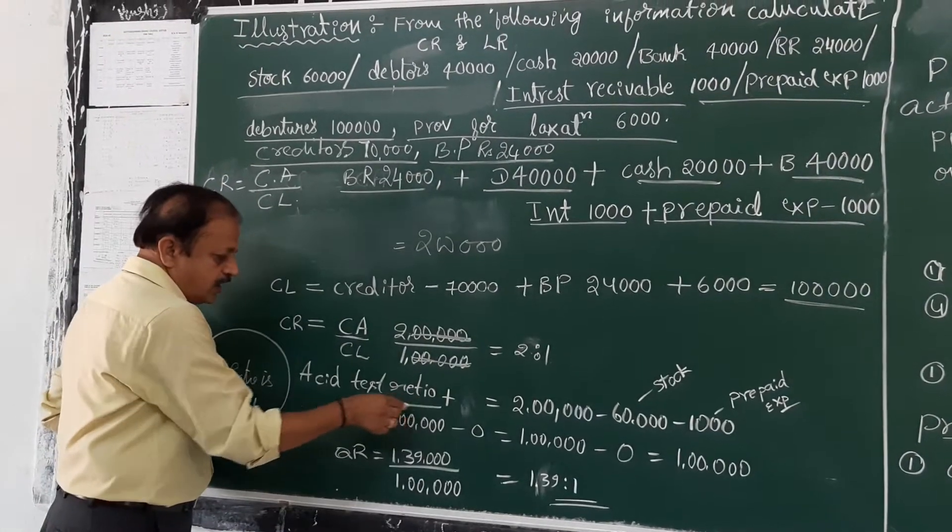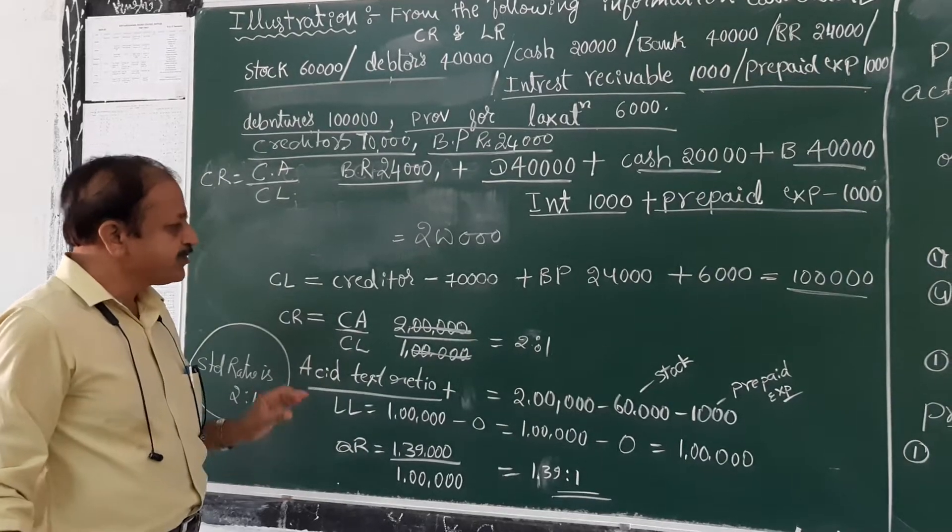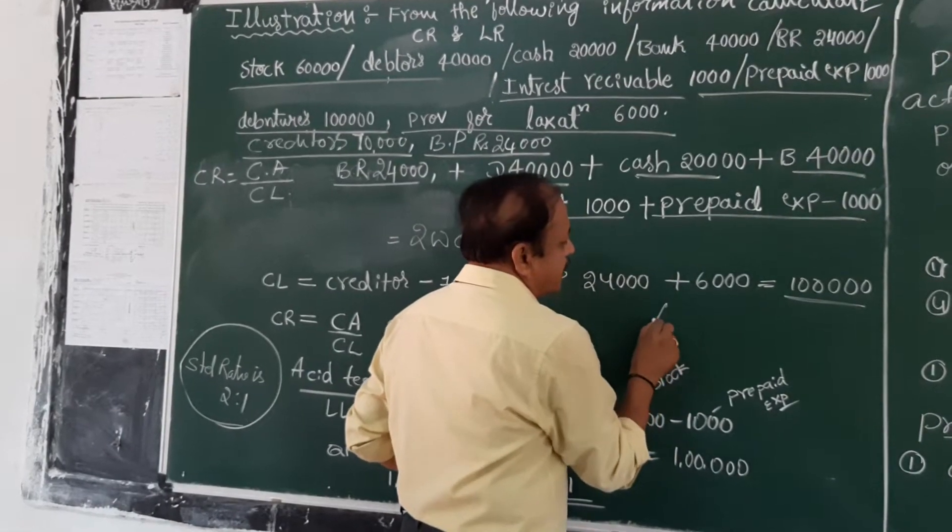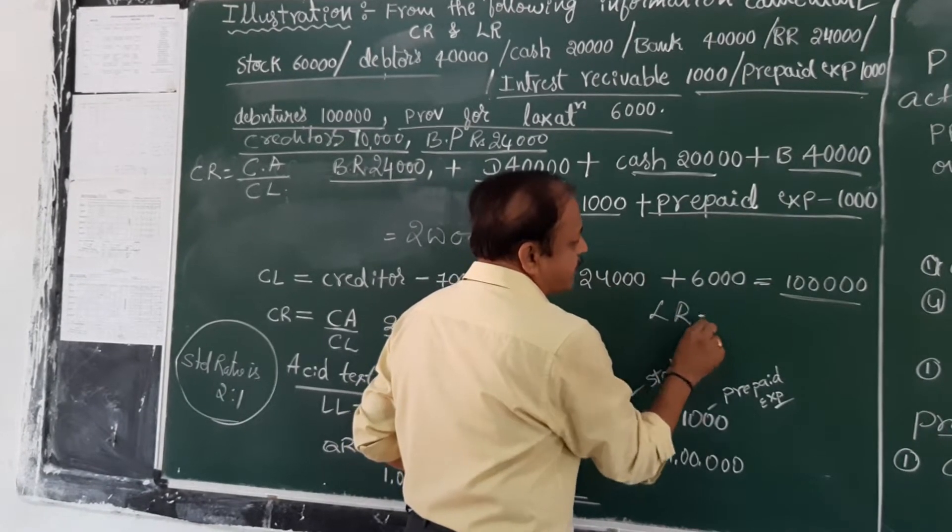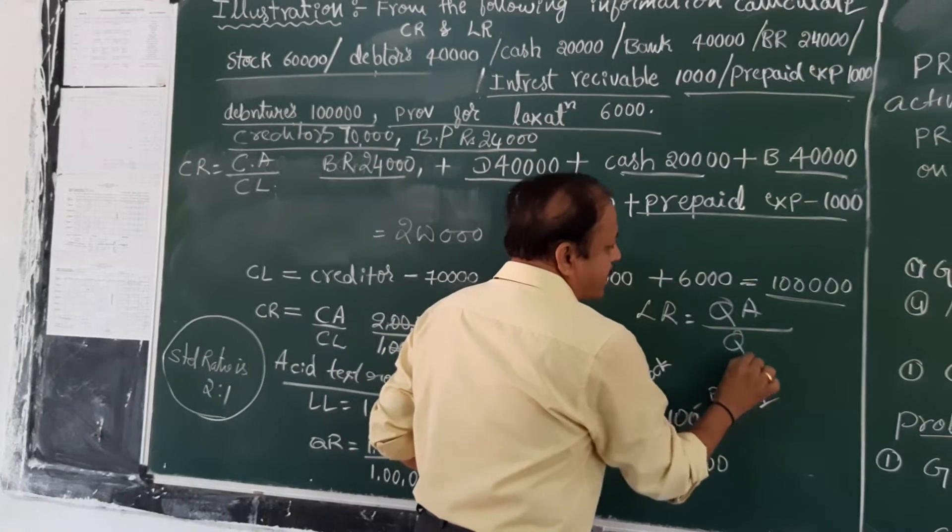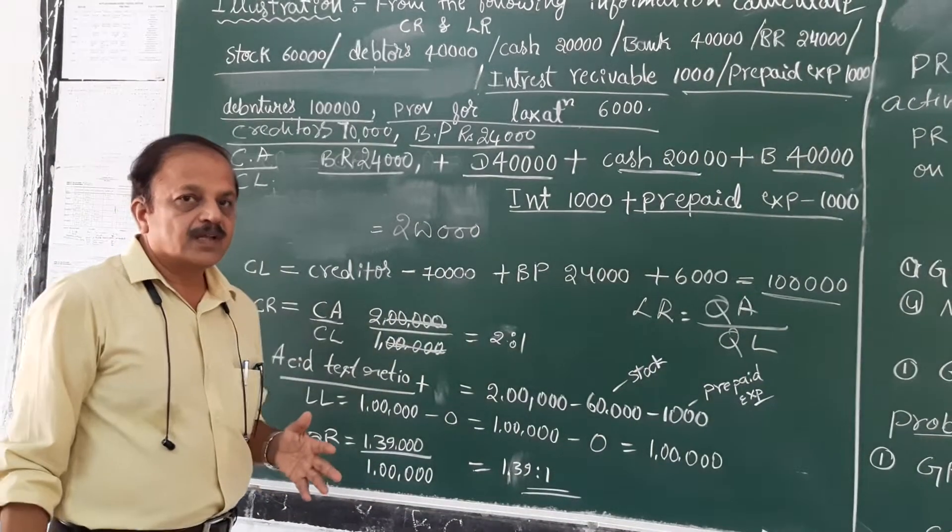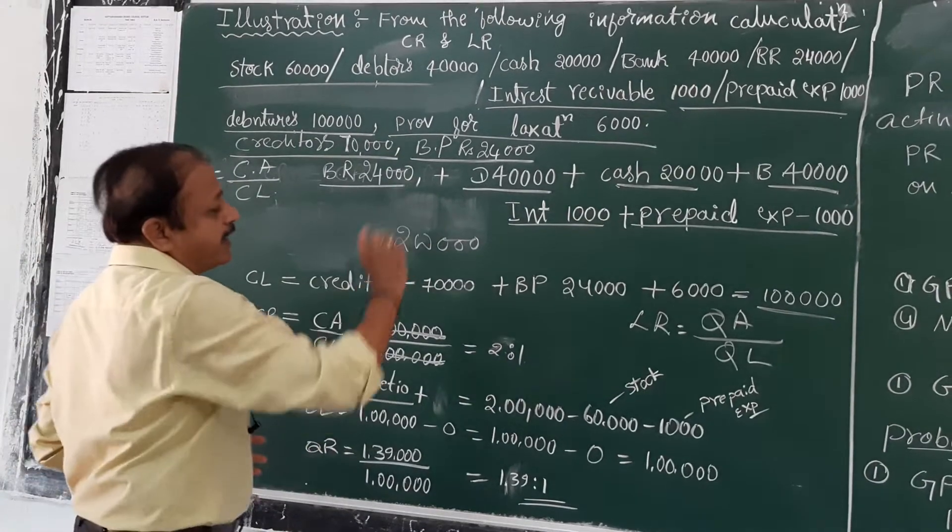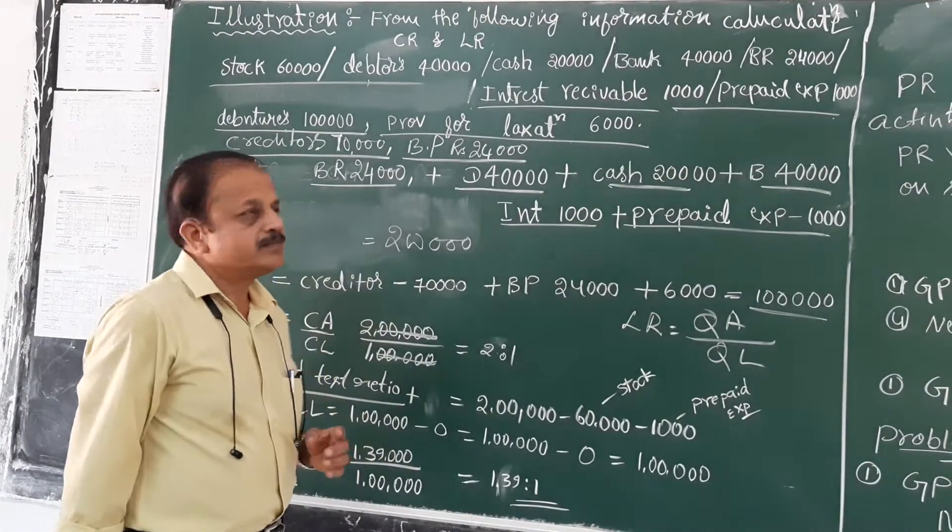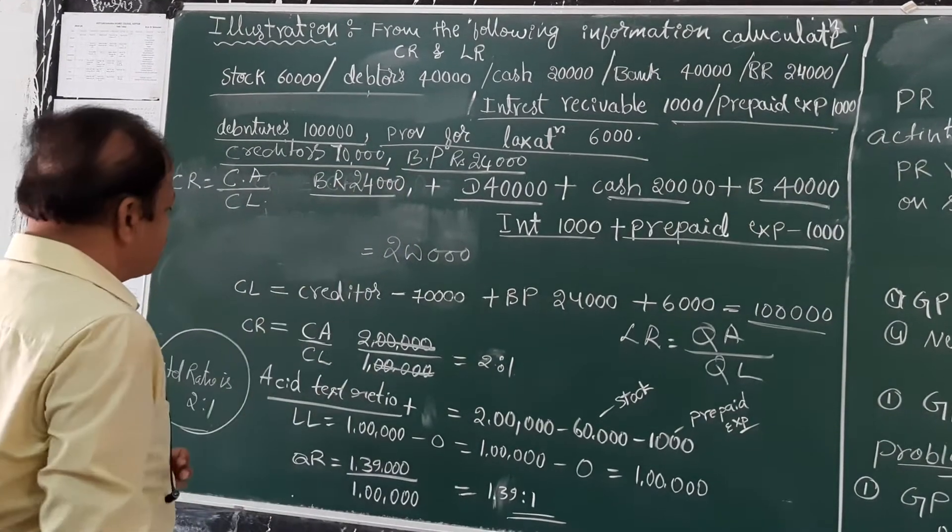Acid test ratio or quick ratio - the formula is liquid ratio equals quick assets divided by quick liabilities. Which are quick assets? All items except stock and which is another one.